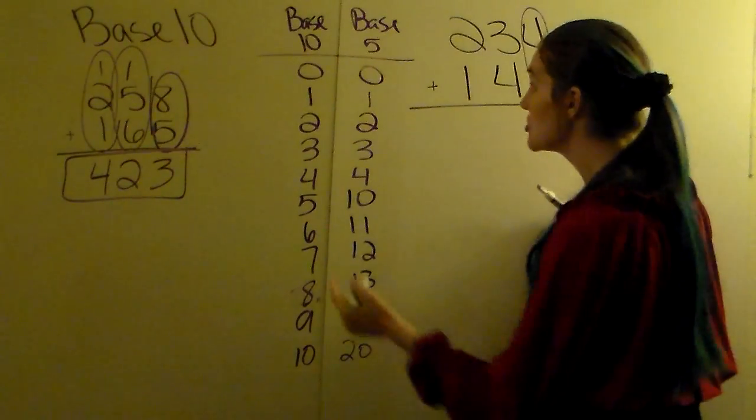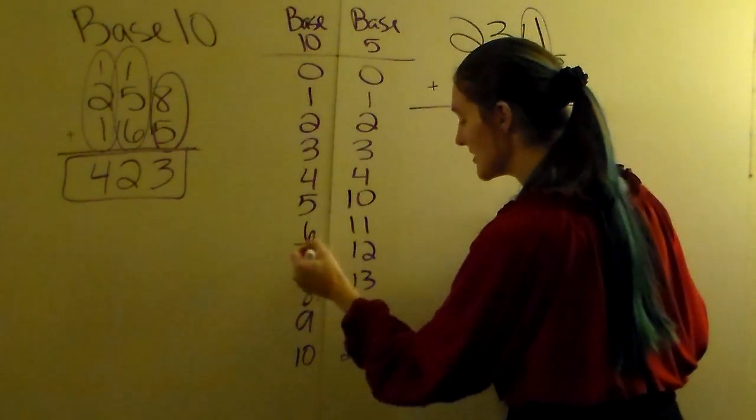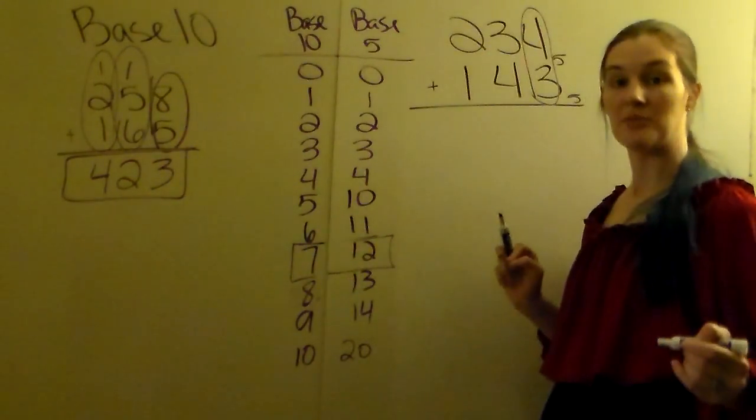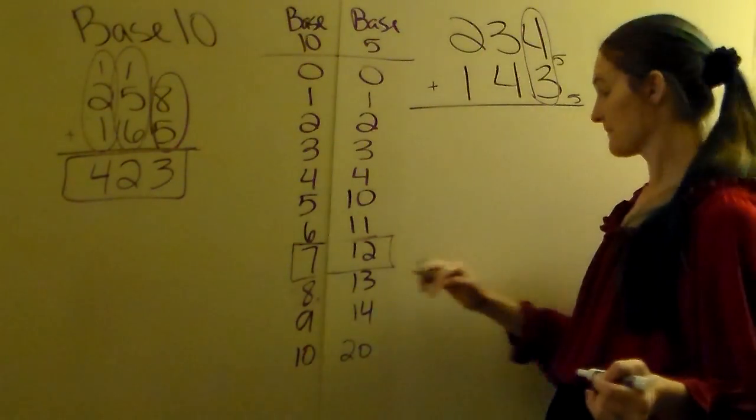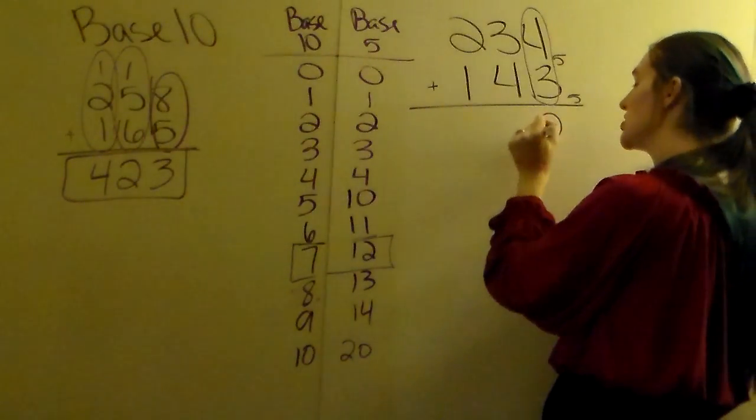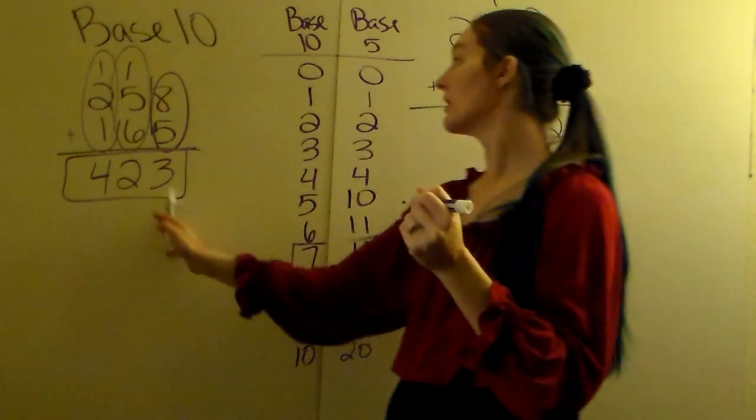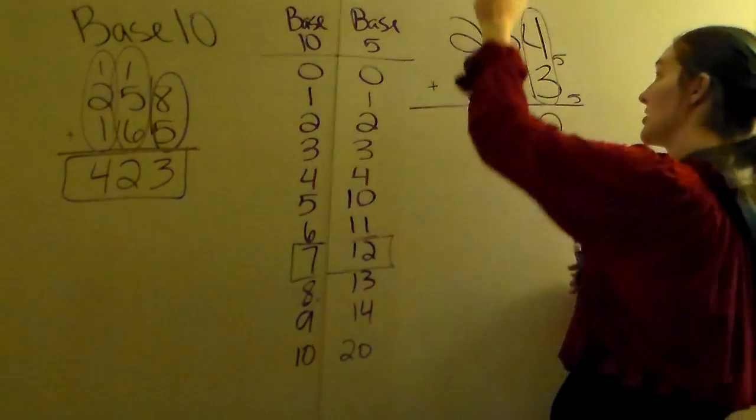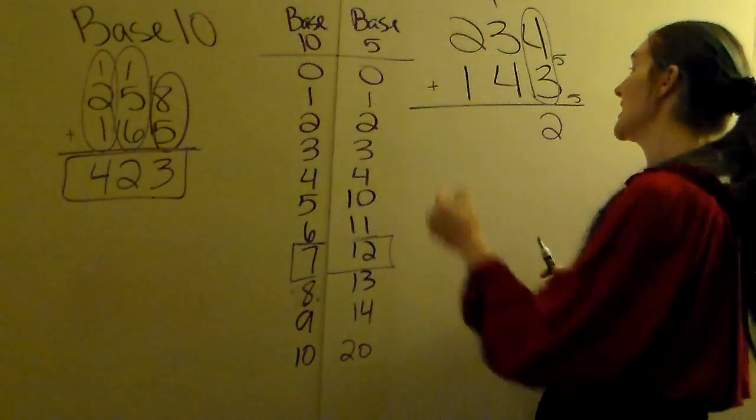We're not allowed a 7 in base 5, so you got to look over to your chart. 7 in base 10 is the same thing as 12 in base 5. So we've got a 12, you've got to carry the 1, just like you did with the 13, so we're going to carry the 1.